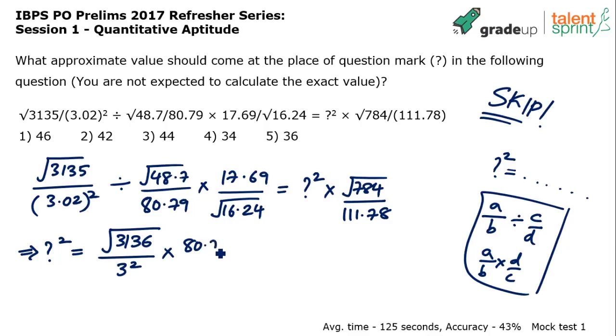Replace division by multiplication and reciprocate the fraction here. So what is in the denominator goes in the numerator, 80.79. And what is in the numerator goes in the denominator, 48.7. Do you understand? You're getting it?